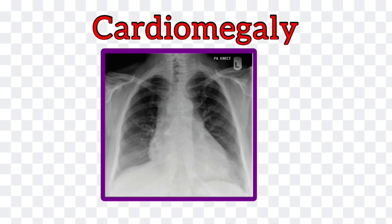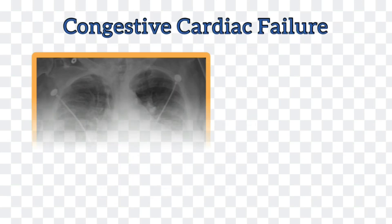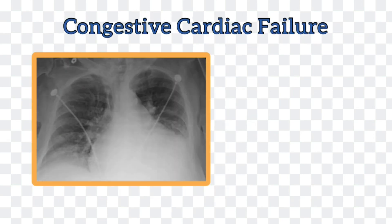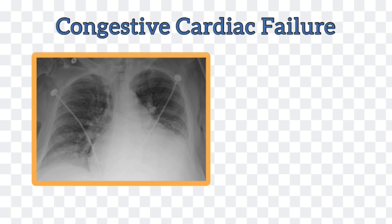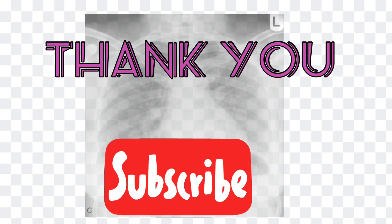Now look at this x-ray showing cardiomegaly. As already mentioned, cardiomegaly should never be commented upon in an AP chest x-ray. Cardiomegaly is present if the maximum diameter of the cardiac shadow is more than half of the transthoracic diameter at the broadest part of the chest. In a classical chest x-ray of congestive cardiac failure, there is cardiomegaly, evidence of pulmonary edema, evidence of pulmonary hypertension, and there can also be presence of pleural effusion. I hope this was helpful. Thank you.